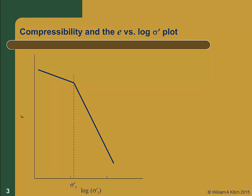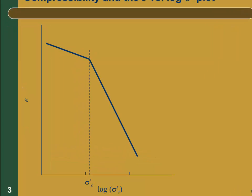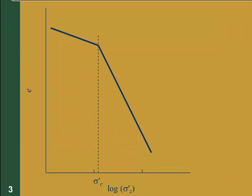We discussed in the previous module that we can plot consolidation test data as either void ratio versus log of effective stress, or strain versus log of effective stress. We'll first look at the void ratio versus log of effective stress plot.